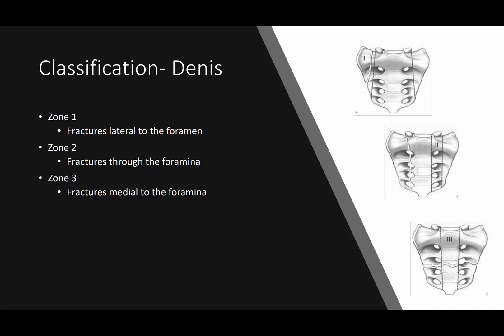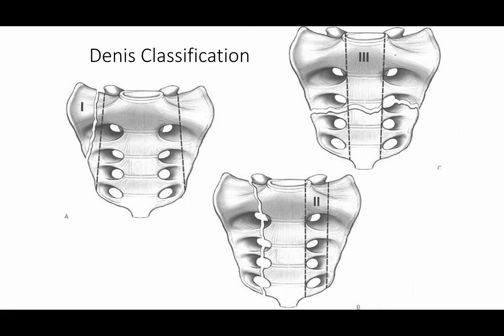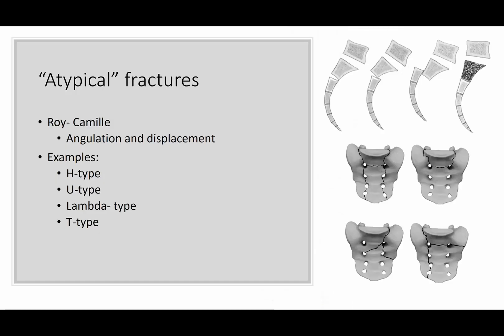The Dennis classification is the one familiar to most orthopedic residents. It has zone one, two, and three: lateral to the foramen, through the foramen, or medial to the foramen. So here you can see the fracture in zone one occurring out laterally. In zone two it's through the foramen, and then in zone three it's anything medial to the foramen — kind of through the sacral body.